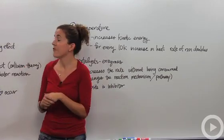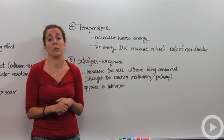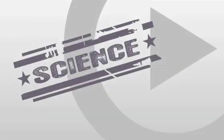So these are the five main things that affect how fast or slow a reaction will take place.